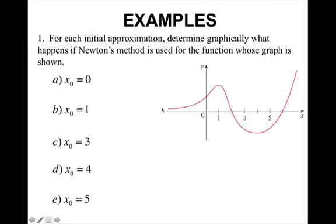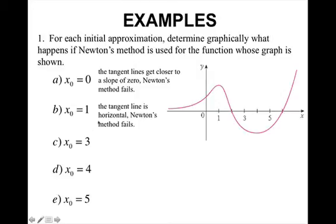Alright, let's look at some examples. Our first example is: for each of the initial approximations, determine graphically what happens if Newton's method is used for the function whose graph is shown. So if we were to pick x₀, if our starting one was at zero, we would notice that the tangent lines get closer to a slope of zero. Newton's method would fail if we wanted to approximate this. If I started here, my tangent lines actually are going this direction and crossing over here. At initial value of one, the tangent line is horizontal, so Newton's method would fail as well.